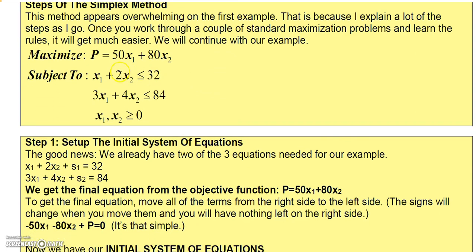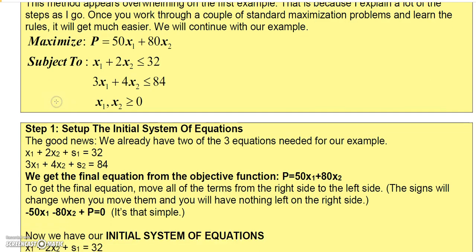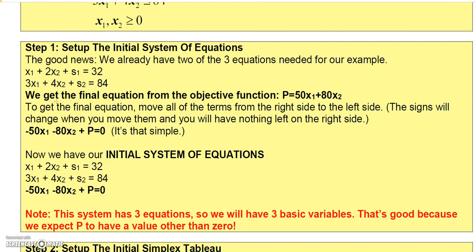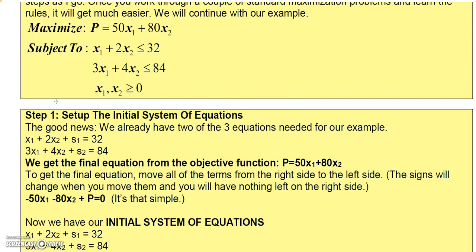Here's our example, and this is a standard maximization problem. Since it's maximization and it's less than or equal to non-negative numbers, and I have my non-negative constraints, then I can use the simplex method. So the first step of the simplex method is to set up your initial system of constraints.